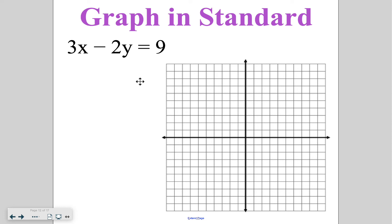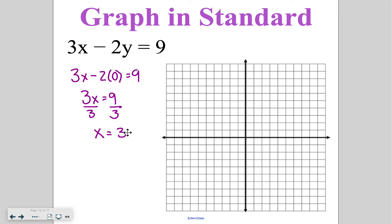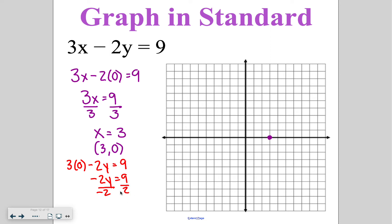When graphing in standard form, we graph using x and y intercepts, which we covered last unit. For the x intercept, I set y to zero: 3x minus 2 times 0 equals 9, so 3x equals 9 and x equals 3. That gives the point 3, 0. Then for the y intercept, 3 times 0 minus 2y equals 9, leaving negative 2y equals 9. Dividing both sides by negative 2, y equals negative 4 and 1 half. So the y intercept is at 0, negative 4 and 1 half.